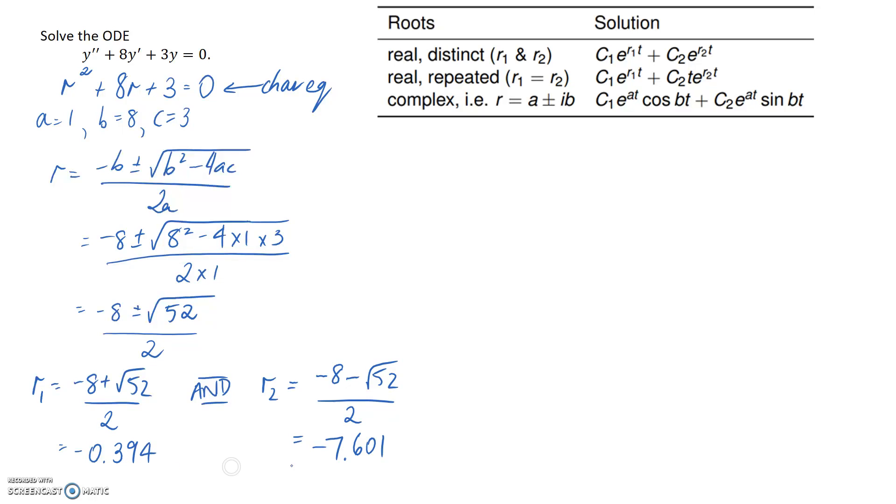Alright, so looking at this what we can see is that we've got real numbers that have fallen out. If we had to take the square root of a negative number we would have had imaginary values falling out, but since we've got two real values and they're different to each other, what we've ended up with is the first case up here with real and distinct roots.